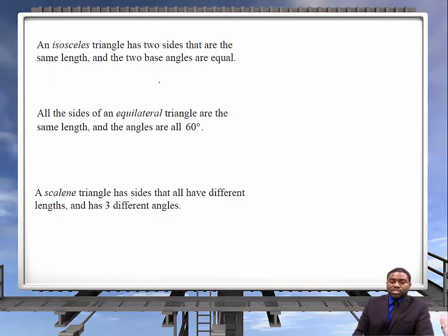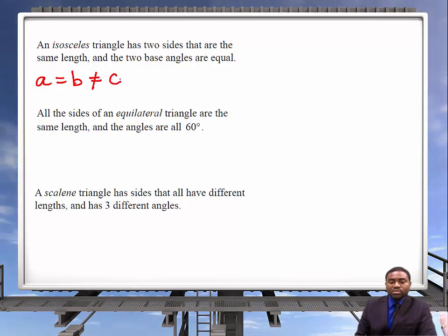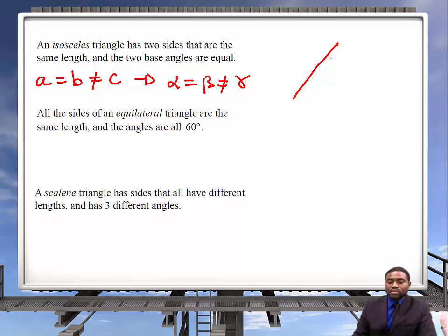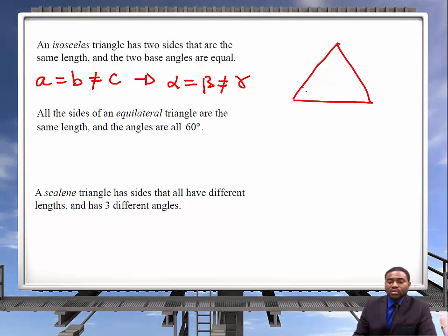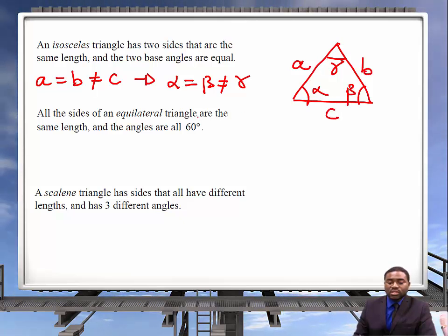An isosceles triangle is one in which two sides are equal. For example, A is equal to B, which is not equal to C, which implies that alpha is equal to beta, which is not equal to gamma. An example shows angles alpha, beta, gamma and sides A, B, C accordingly.